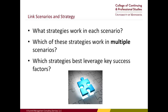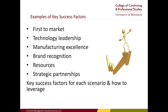Out of the scenarios you conceive, the question is what strategies are likely to work in each scenario. Are there strategies that work in multiple or even all scenarios? If there are strategies that work across multiple scenarios, those are the things you can begin implementing right now — there's a good likelihood that will give you a leg up on competition. And then the question of which strategies best leverage key success factors. Are there success factors you have as a competitive advantage? For example, can you bring products to market quicker than your competition? Do you have a technological advantage, manufacturing excellence, quality, brand recognition? Coca-Cola was for many years the world's most recognized brand — that's now been superseded by Apple. How do you leverage whatever key success factor you own into your strategies going forward?